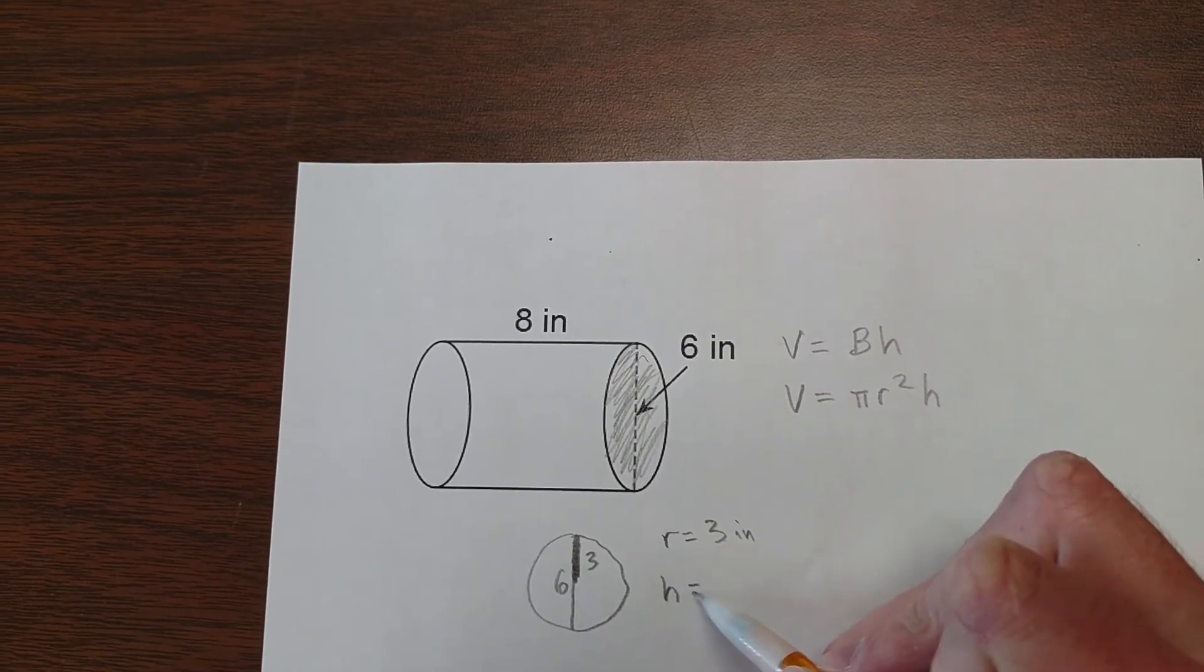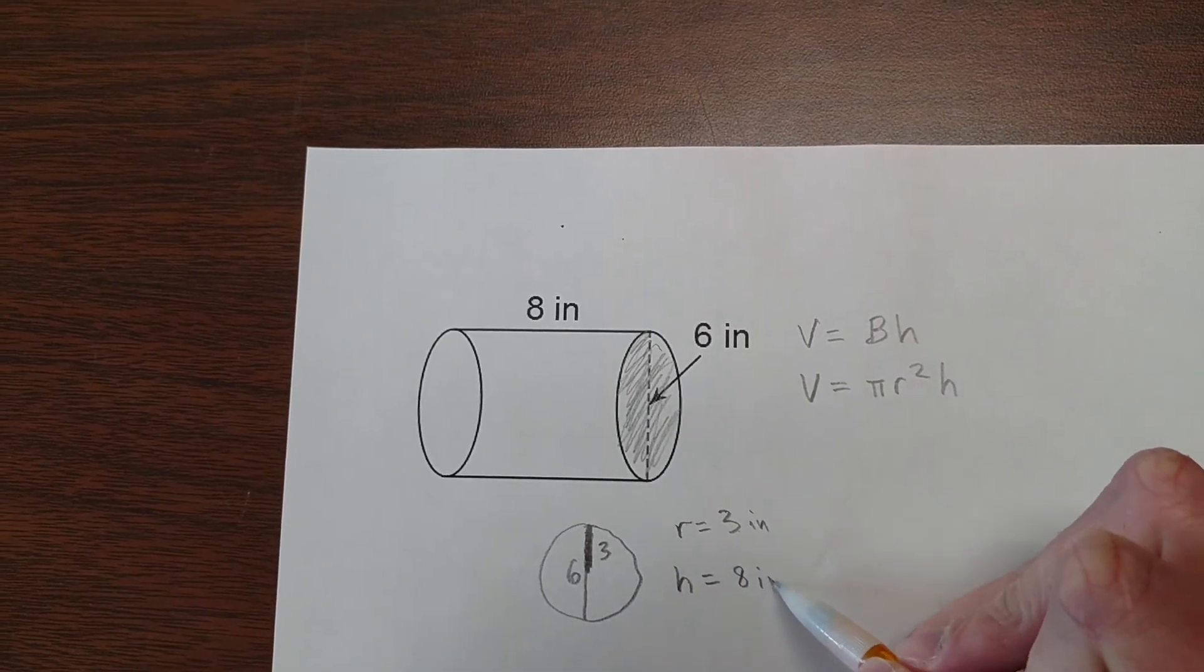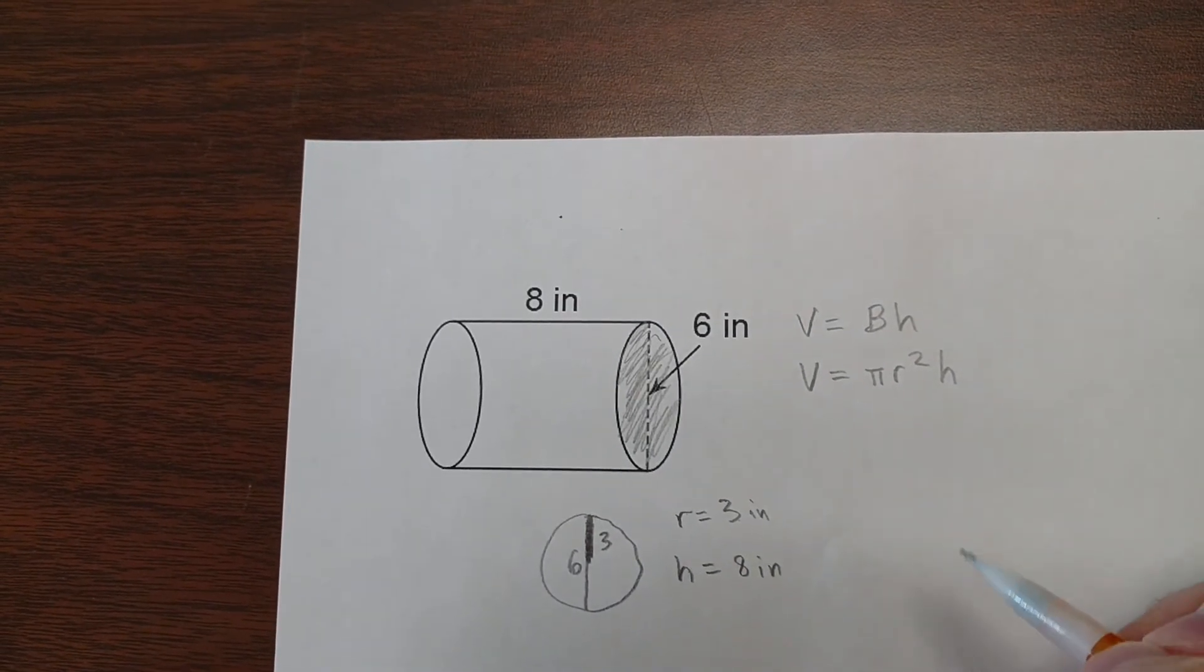The height of the cylinder, even though it's not sitting on its base, is still eight inches because the height is always perpendicular to the base.